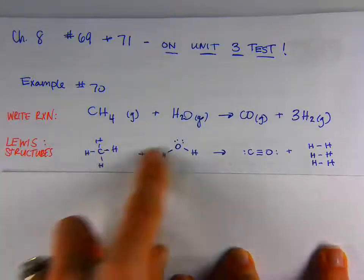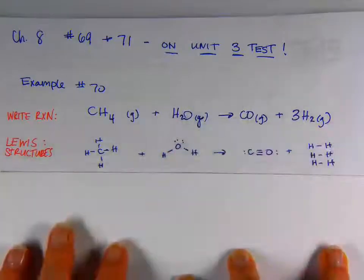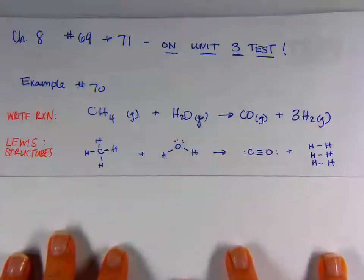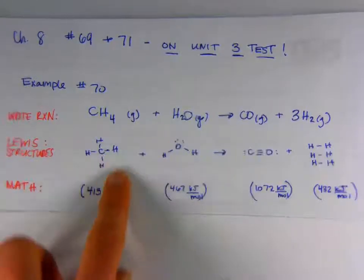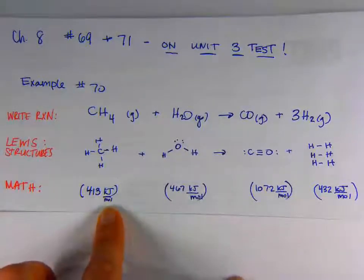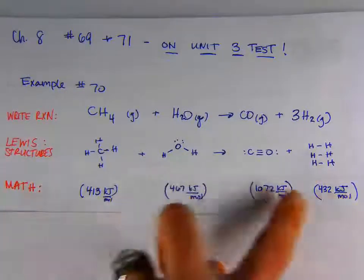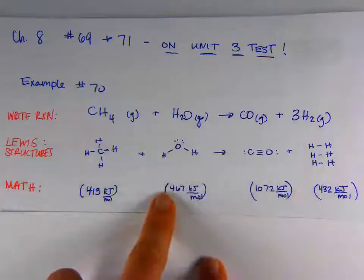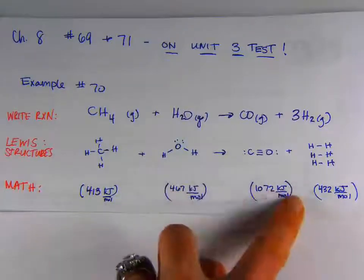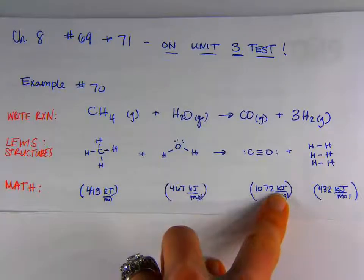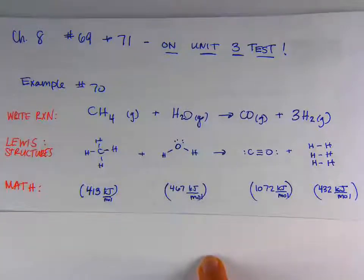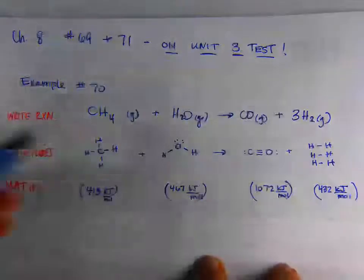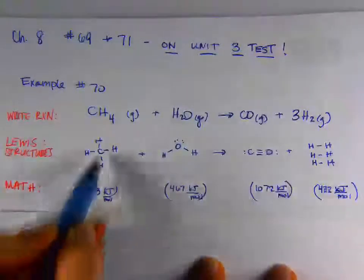So we know that we can look up in the table the bond enthalpies for all of these different species. And that's exactly what I've done right here. So for the carbon-hydrogen bond, according to your textbook, the bond enthalpy is 413 kilojoules per mole. And I've gone right down the list. This is the enthalpy for one oxygen-hydrogen bond, one triple carbon-oxygen bond, and then one HH bond.